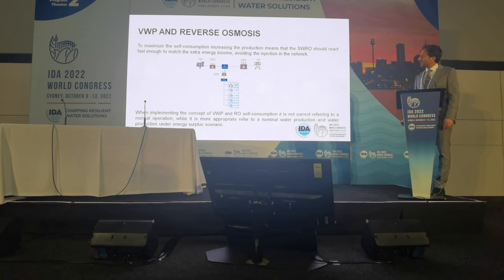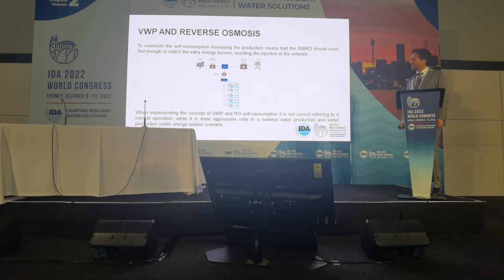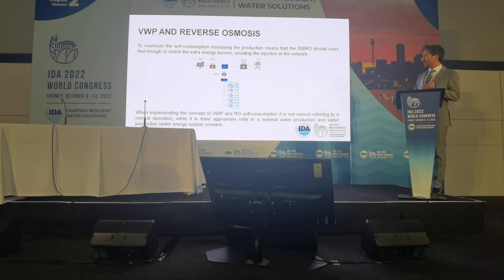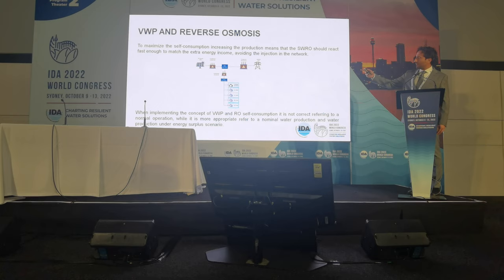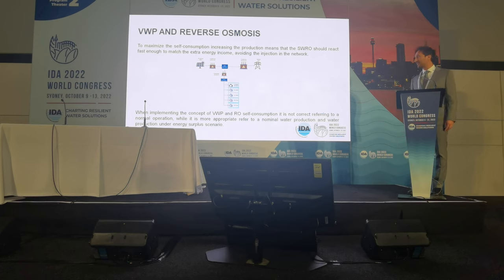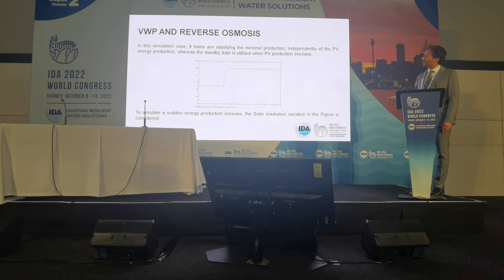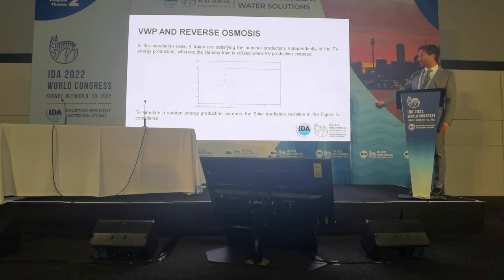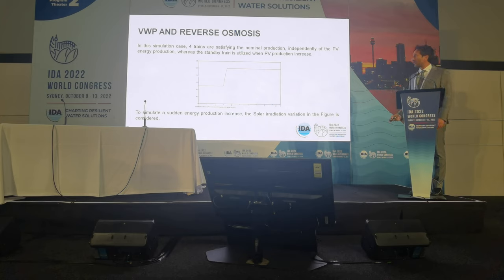This is a simulation we made, where a seawater RO plant has five trains with one on standby — though standby is not the proper term here, because the concept requires a nominal water production mode and a surplus-energy production mode. We have trains associated with HP pumps. If we increase production because irradiation jumps from 500 W/m² to 1,000 W/m² — for example, it was cloudy and now there is sun — we have a sudden production of energy from the PV.